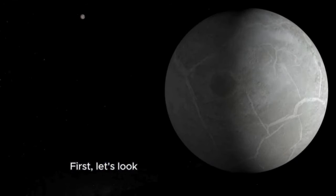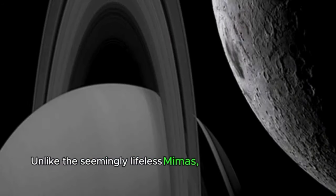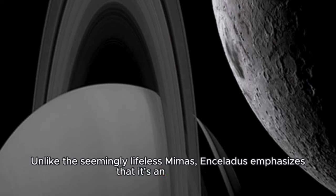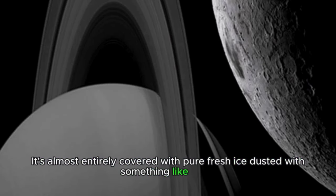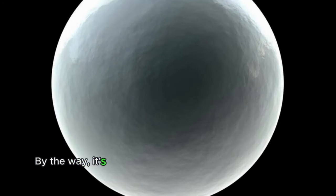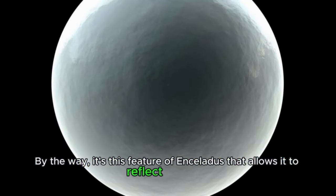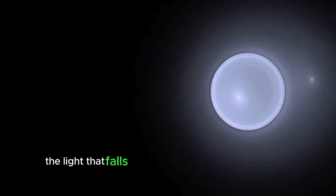First, let's look at the surface of the Moon. Unlike the seemingly lifeless Mimas, Enceladus emphasizes that it's an icy satellite. It's almost entirely covered with pure fresh ice, dusted with something like snow. By the way, it's this feature of Enceladus that allows it to reflect almost all the light that falls on it, which only makes its surface colder.